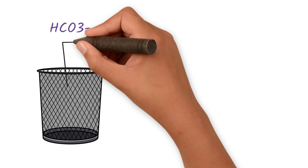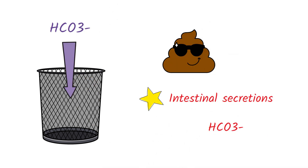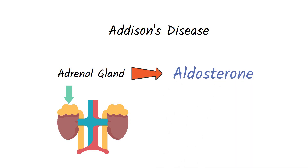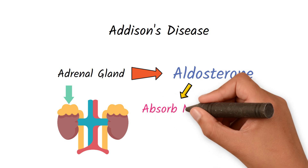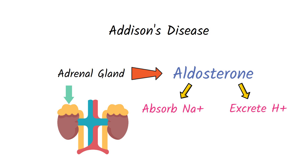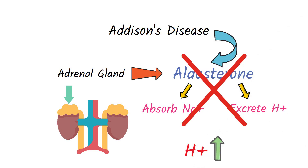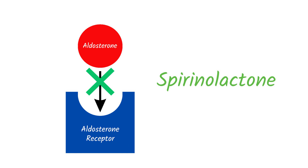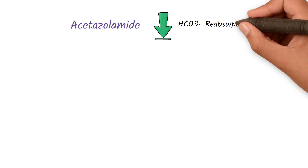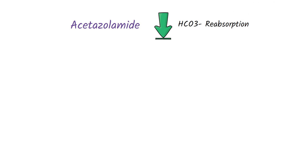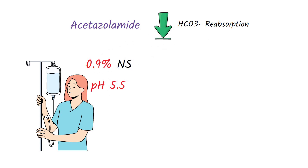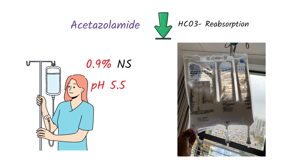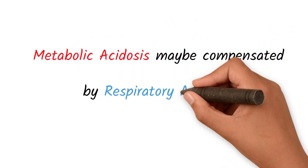Removal of bicarbonate from the blood can happen during severe diarrhea, as intestinal secretions are rich in bicarbonate ions. Addison's disease, due to insufficient production of aldosterone by the adrenal glands, can also cause this — aldosterone increases sodium reabsorption and promotes hydrogen ion excretion, so insufficient aldosterone leads to hydrogen ion retention. Diuretics such as spironolactone can block aldosterone receptors. Acetazolamide reduces bicarbonate reabsorption. Normal saline has a pH of around 5.5 and can cause acidosis. Total parenteral nutrition can result in accumulation of hydrogen ions. Metabolic acidosis may be compensated by respiratory alkalosis.